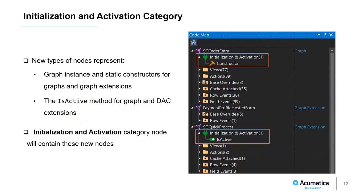Codemap now displays nodes representing information about initialization and activation. Such nodes are grouped under the new initialization and activation category node. For graphs and graph extensions, there will be nodes representing instance and static constructors. For graph extensions and DAC extensions, there will be nodes representing isActive methods.